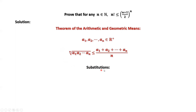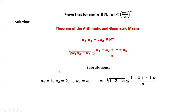Here is the tricky part. We replace a_i by i — that means a1 by 1, a2 by 2, and an by n.